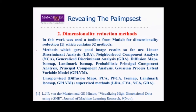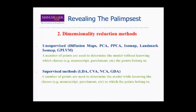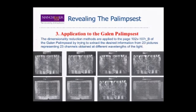Some of these methods are unsupervised, others are supervised. The difference is that in the supervised case, a number of points are used to determine the model while knowing the classes of the respective points — so whether the respective points represent manuscript, parchment, and so on. While in the case of the unsupervised, it is not necessary to know which classes the points belong to — but it is better to know, actually.